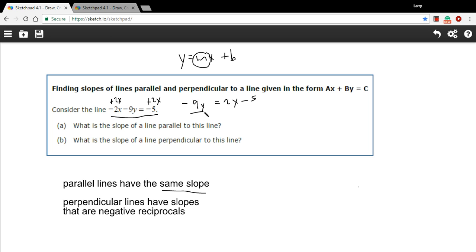And then we just have to divide by negative 9. Here, this is going to cancel. And then over on the right, we take this a term at a time. So this is 2x divided by negative 9.